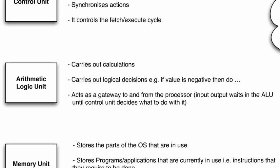The next part is the arithmetic logic unit. This one is quite common sense — it carries out calculations; arithmetic carries out calculations. It carries out logical decisions, e.g., if a value is negative, then do something. The second part of ALU is the 'logic', so it carries out logical decisions. It also acts as a gateway to and from the processor — input and output waits in the ALU until the control unit decides what to do with it.